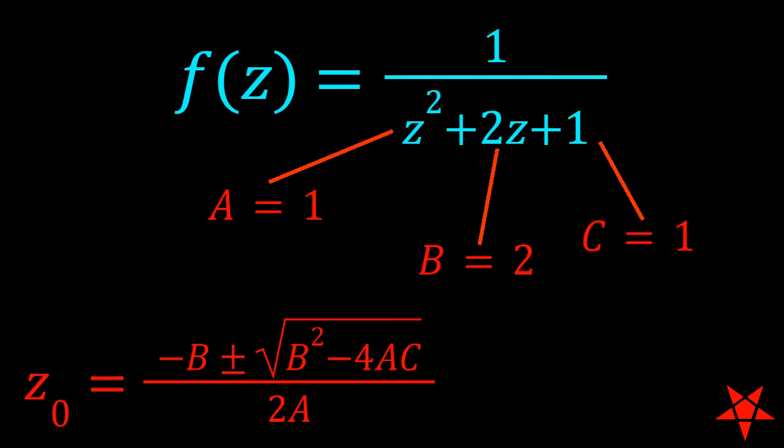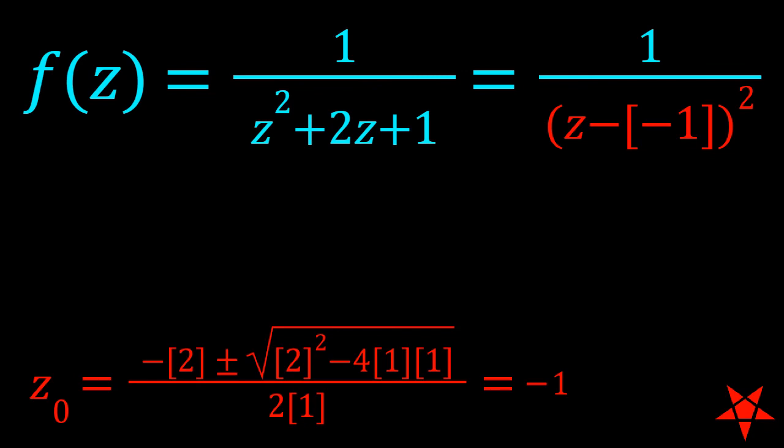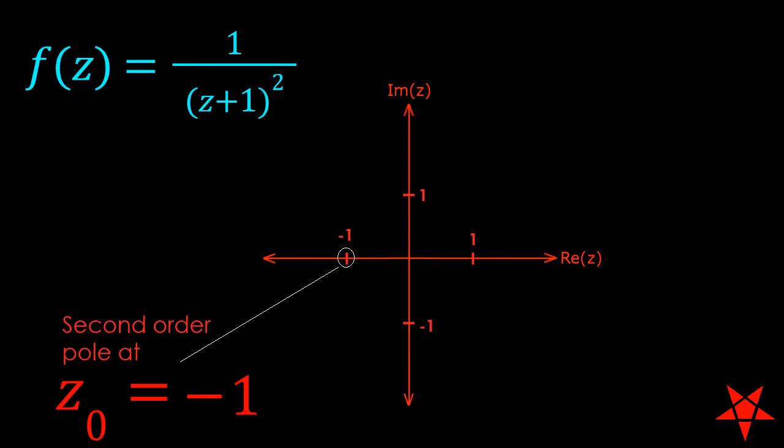Application of quadratic formula to the denominator reveals that f of z has a second-order pole at z equals minus 1, so we'll only be dealing with one singular point in this problem.